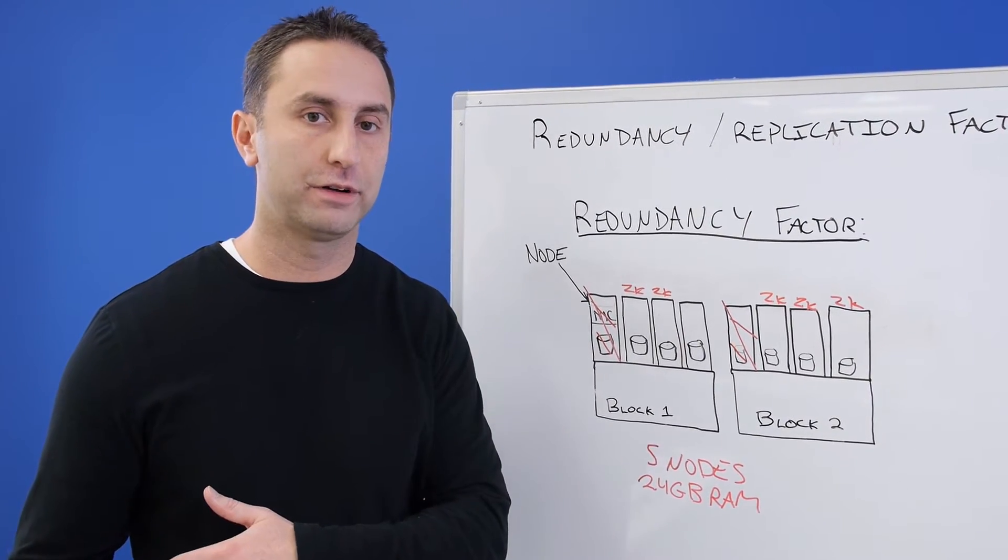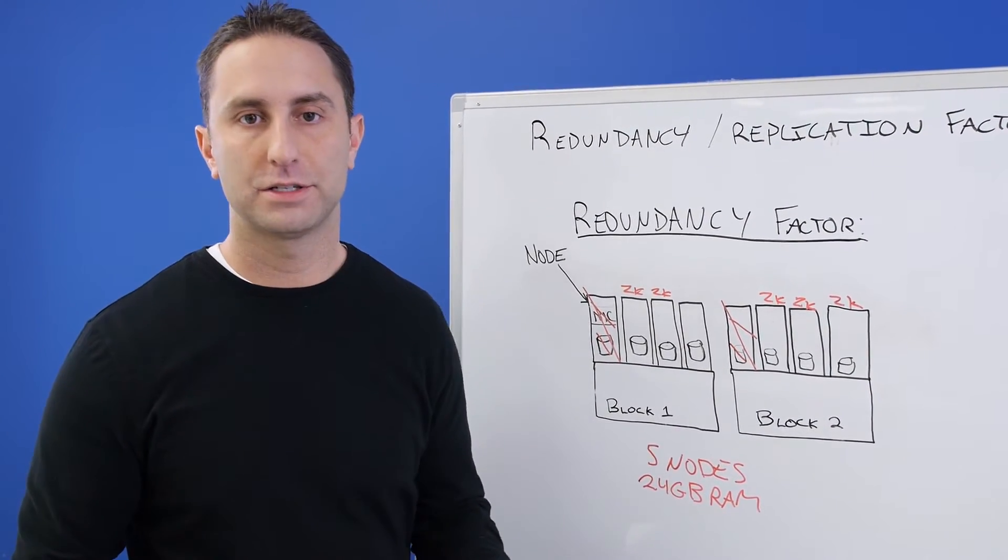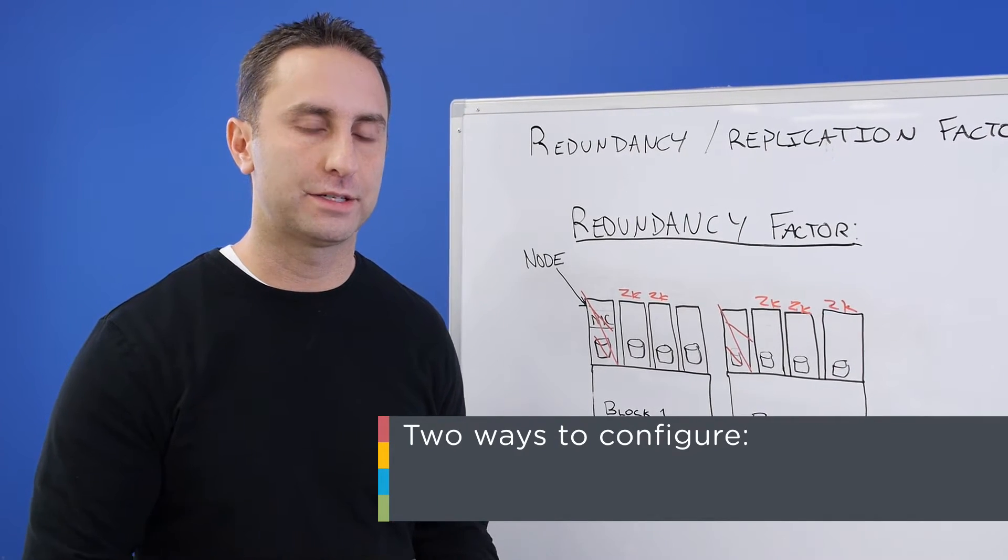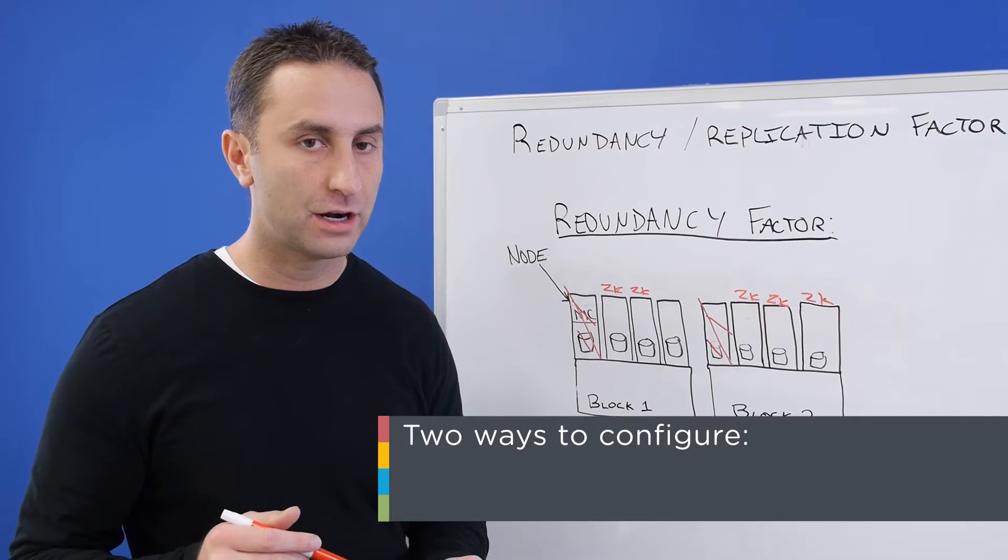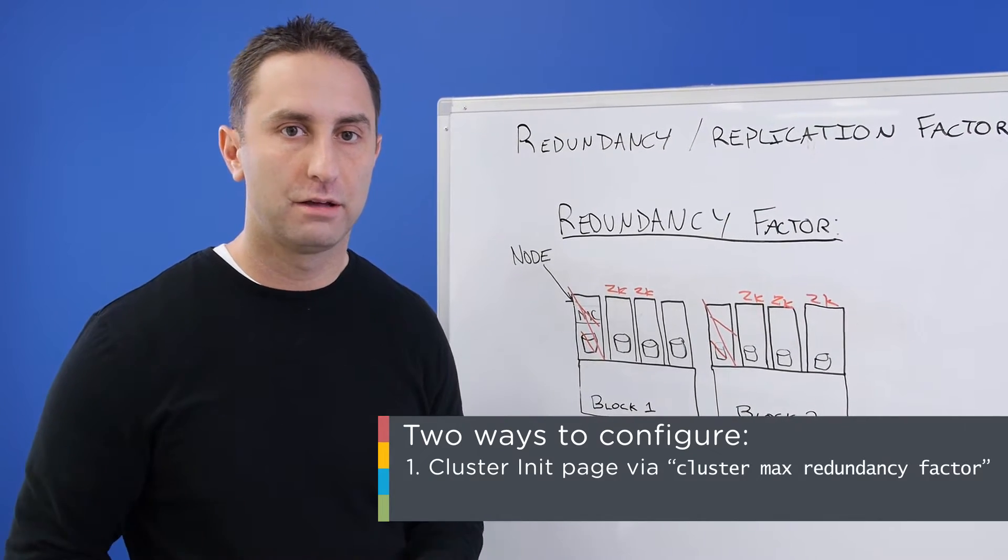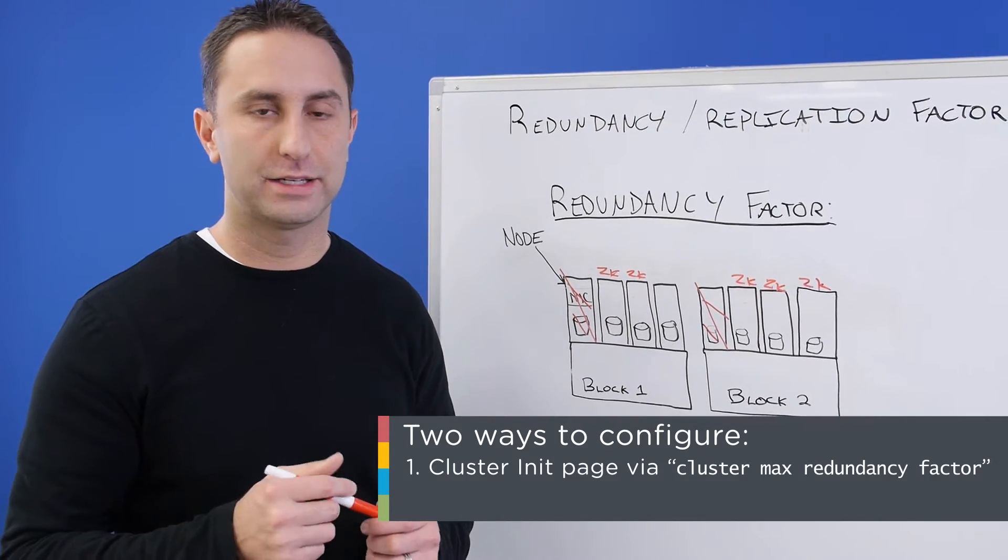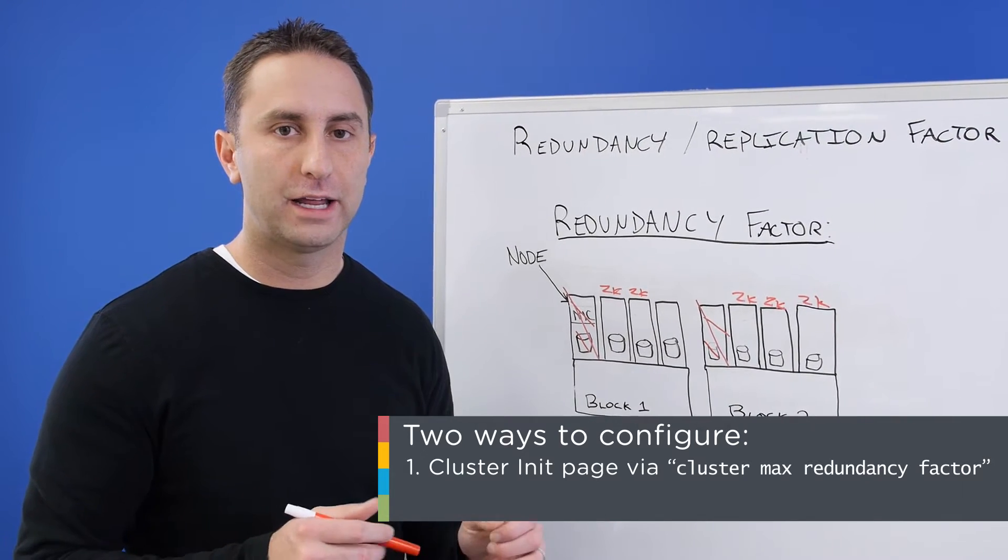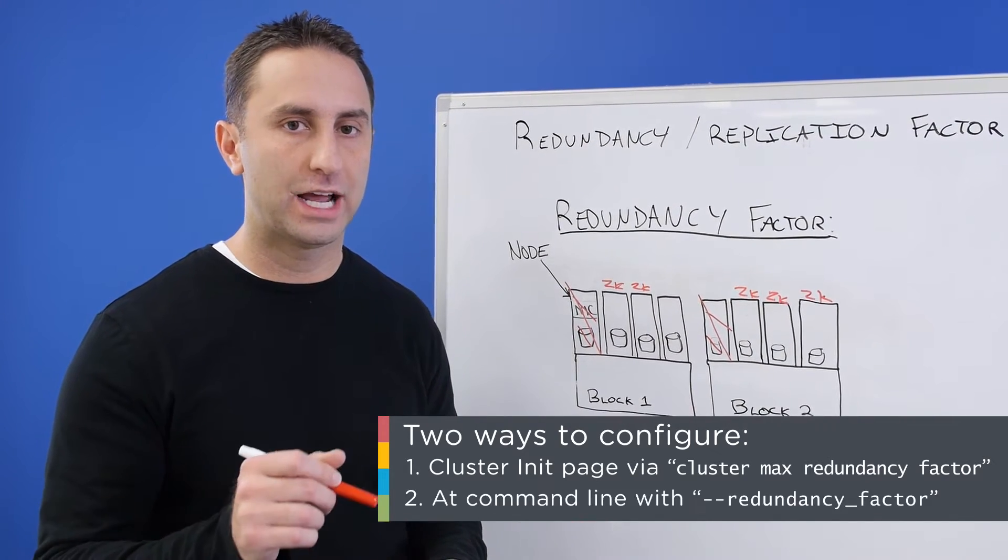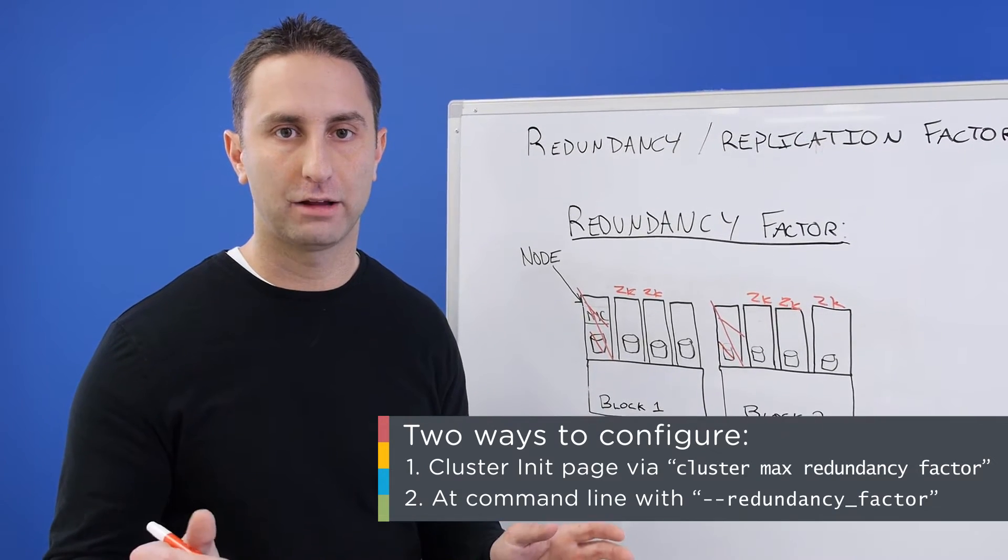Now once you've verified that you've met these requirements, you're able to go ahead and configure your redundancy factor three cluster. There's two places where you can set this up, and it can only be done before the cluster is first created. You can either set it up in the cluster init page via a text box that says cluster max redundancy factor, or you can define it at the command line with the --redundancy_factor flag when you're using your cluster create command.